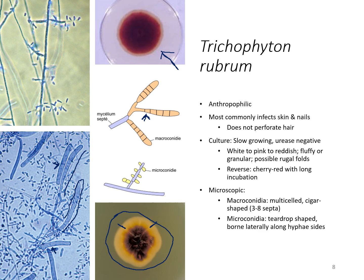The microconidia, the small ones, are kind of a teardrop shape. They come right off the hyphae itself — you can see them coming off the edge, really small, just kind of sticking up everywhere. All of these are microconidia, and at the bottom image there are a lot of them. Again, Trichophytons have more microconidia than they do macroconidia.